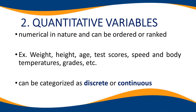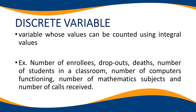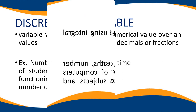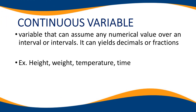Quantitative variables can be discrete or continuous. Discrete variables are variables whose value can be counted using integral values. Examples are number of enrollees, dropouts, deaths, number of students in a classroom, etc. These are variables that can be counted exactly. Unlike continuous variables, which can assume any numerical value over an interval, and can yield decimals or fractions — like height, weight, temperature, and time.